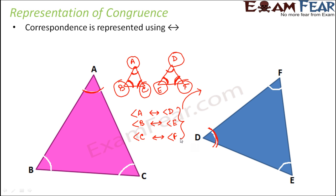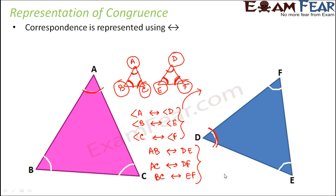So this is about the correspondence of angles. Similarly, the sides would also be corresponding to each other. For example, the side AB will correspond to which side? Side AB will correspond to side DE. Similarly, side AC will correspond to side DF, and BC would correspond to EF. So these are the corresponding sides of the two congruent triangles. The corresponding vertices would be: A corresponds to D, B corresponds to E, and C corresponds to F. So any time two triangles are congruent, their corresponding parts — meaning their corresponding sides or their corresponding angles — should also be equal.